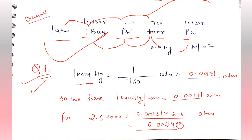We have to convert 1 mmHg to atm. Note that 1 mmHg is also called 1 torr.